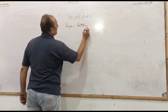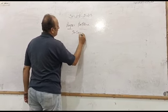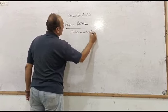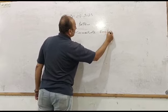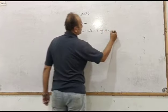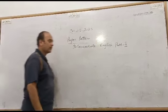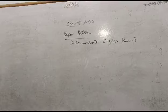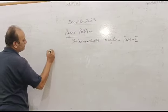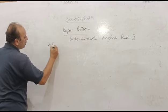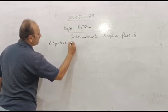Paper pattern. Intermediate English Part 2. You see two different ones. In English, it's called objective paper.